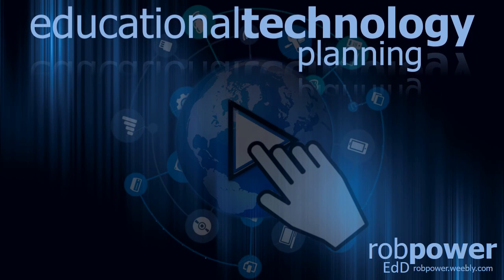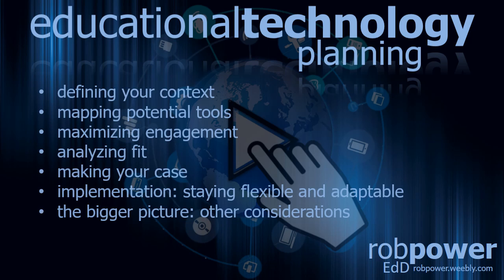In this presentation, we're going to explore a step-by-step process for effective educational technology planning, including defining and specifying everything about your context that could and should influence any technology integration decisions, mapping different technologies against their teaching and learning benefits, factors to consider to ensure we maximize learner engagement when using educational technology, formally analyzing how well different technologies fit with our teaching and learning needs and context, making a formal documented case for selecting and integrating specific technologies, staying flexible and adaptable during actual implementation, and additional bigger picture considerations that could influence our initial plans or long-term implementation prospects.